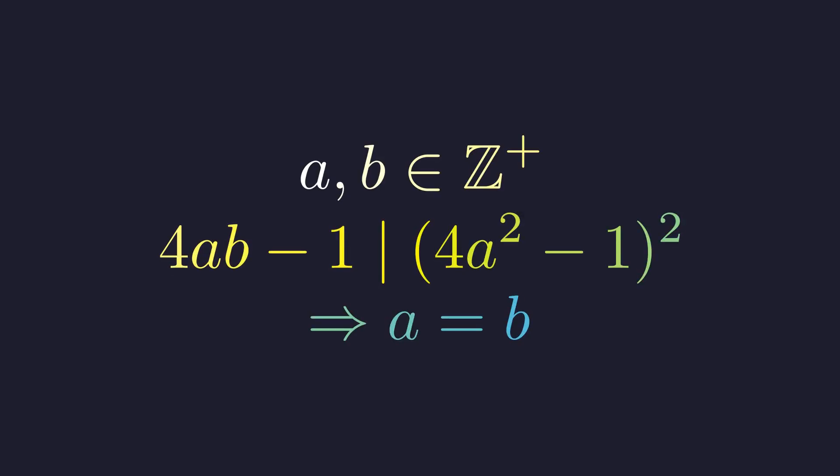This problem is from the 2007 International Mathematical Olympiad where it was presented as problem number 5. The statement is as follows: Let A and B be positive integers. We must show that if the quantity 4 times A times B minus 1 divides the square of 4 times A squared minus 1, then A must be equal to B.